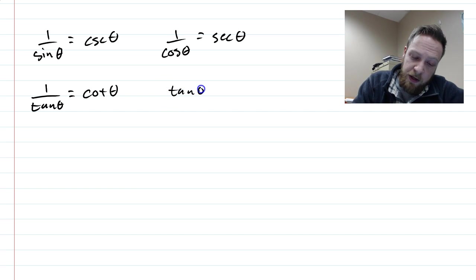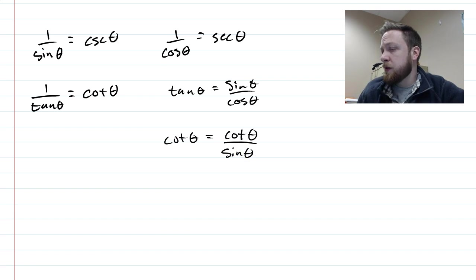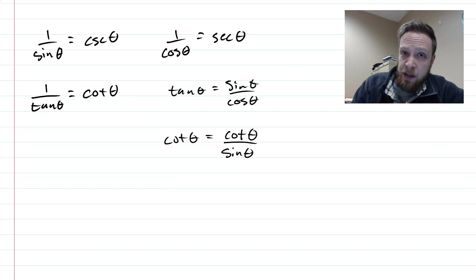Another thing, because tan θ is sin over cos, whenever you see a cotangent, you can always rewrite it as cot θ equals cos θ over sin θ. So these are some of the things we know already. And this is where you begin simplifying and doing identities.